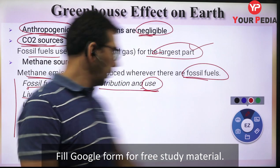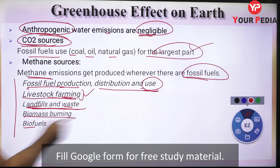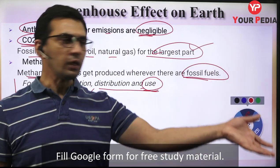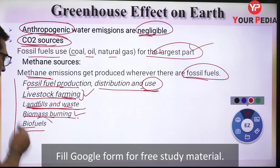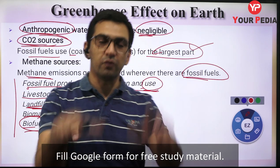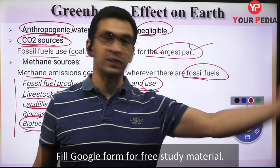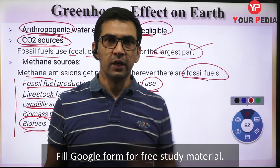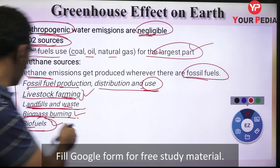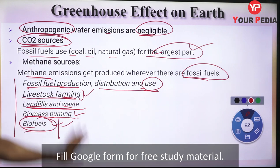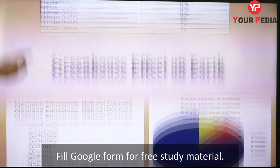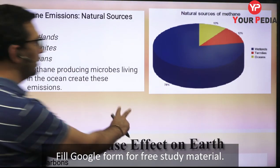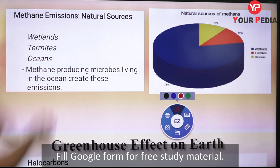Biomass burning - for example, burning of wood - also releases methane. Biofuels such as ethanol, produced from sugarcane and similar crops, also generate methane during production because they are of biological origin. These are some of the areas from where methane is produced, and most of these activities are artificial in nature, meaning human activities have increased methane release.